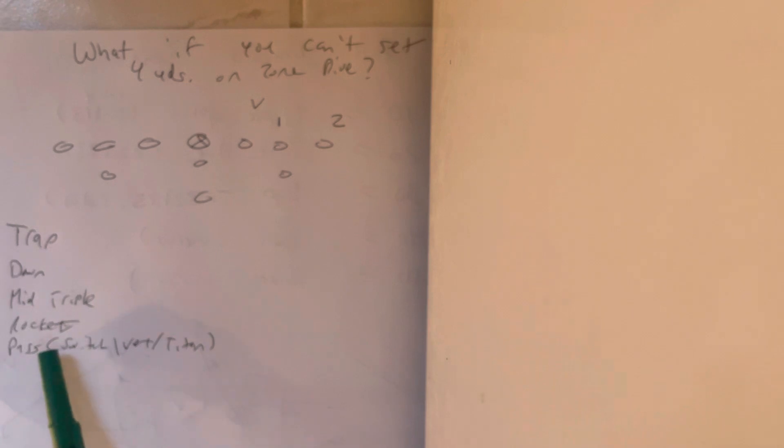Third and long, fourth and long, got to score now. Remember, the secondary flies up. Throw it. Run switch, vert, and tighten. Switch and tighten are going to bind the corner. Vert is going to bind the safety.